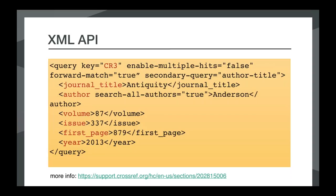The most precise XML query requires you to mark up each citation following the rules established in the deposit schema. In this example on screen, the basic citation metadata is split into separate elements — journal title, author, volume, issue, first page, year. This is a well-formatted citation query. Each citation has a query key you can use to match the result to the corresponding reference, and the query key usually corresponds to your reference numbering format, though you can do whatever you want.